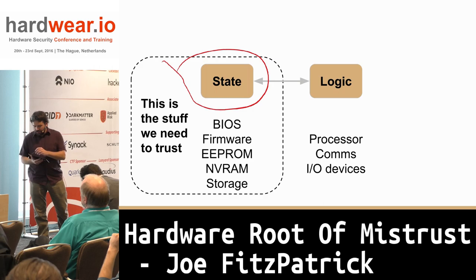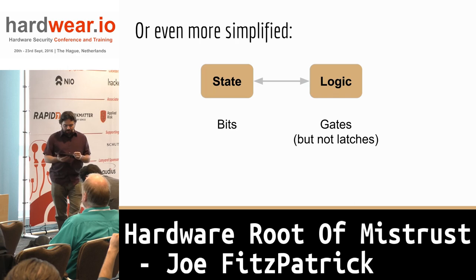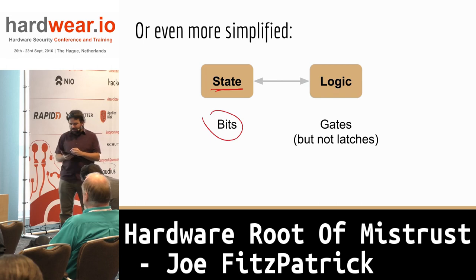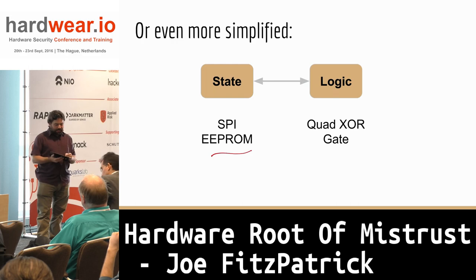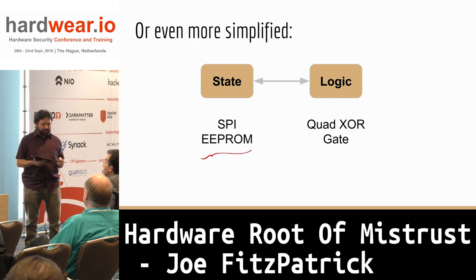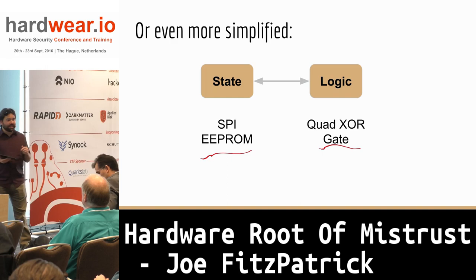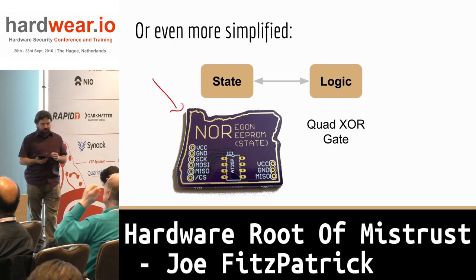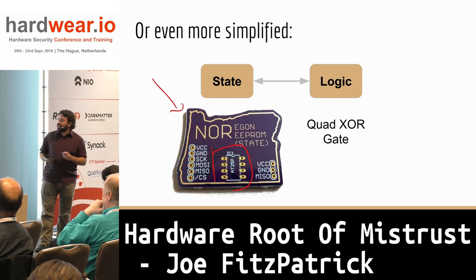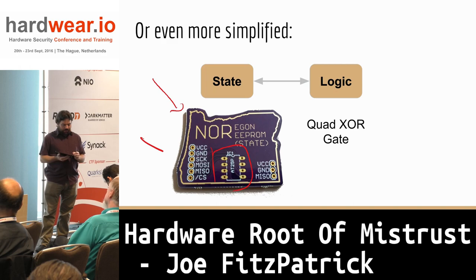Let's simplify to the most basic scenario: we have state — a bunch of bits structured in various ways — and logic — gates configured as pure combinational logic with no latches. A SPI EEPROM is a pretty simple device with a bunch of flash — a few K or a few megabytes. And then a quad XOR gate — a chip designed in the 60s and 70s that hasn't changed much. So I made a PCB in the shape of Oregon — the Nor-Egon Nor-EEPROM state board. There's a spot to drop in a SPI EEPROM. We get our commands from the computer, spit out data to the logic board.